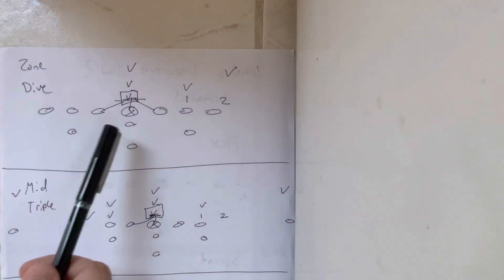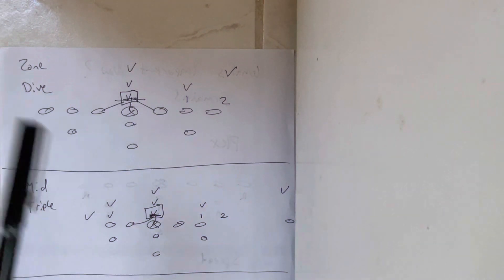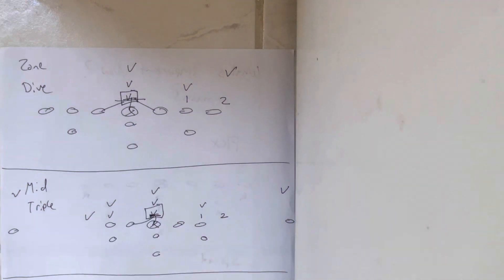So when you run the zone dive, you want to get a triple team on a zero technique. Let's say it's a triple stack defense, because that seems to be what high school coaches are concerned with the most. You're going to triple team the zero technique.